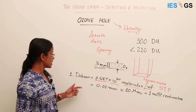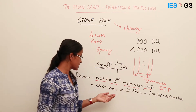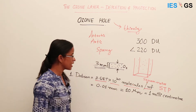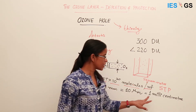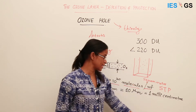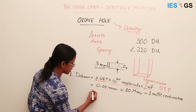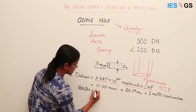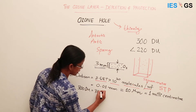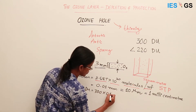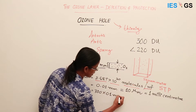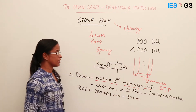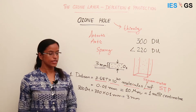Each Dobson unit corresponds to 0.01 millimeter of pure ozone thickness, so converting 300 Dobson units — 300 × 0.01 millimeter gives 3 mm thickness of ozone layer.